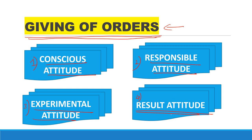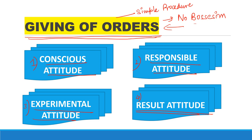Further, according to Follett, giving of orders is a very simple procedure, and no one should be bossed over. Even if you are a dominant authority in an organization, it does not mean that you should show bossism over your subordinates. Rather, you should learn the techniques of manipulation according to Follett — meaning use techniques such that your subordinate does not question you, and without questioning, accepts your orders. When the subordinate accepts orders without questioning, it will be more beneficial because they will also have no difficulty in implementing those orders.